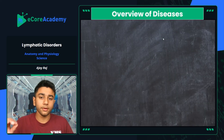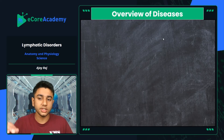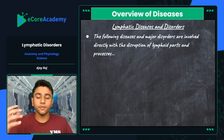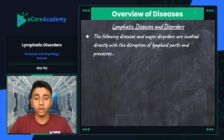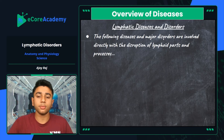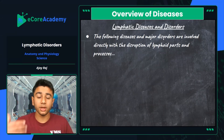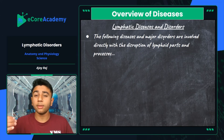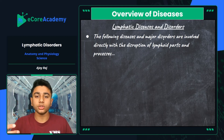Let's take a look at the overview of the diseases we're going to cover. These lymphatic diseases and major disorders are directly involved with the disruption of lymphoid parts and processes. They relate to lymphoid structures but also have correlations with different parts of the body, and I'll tell you the different degrees of these disorders, how they can be prevented, and what their symptoms are.